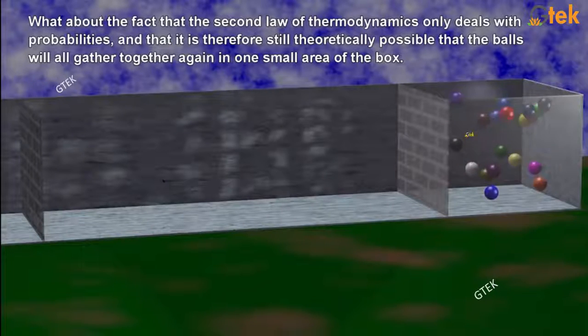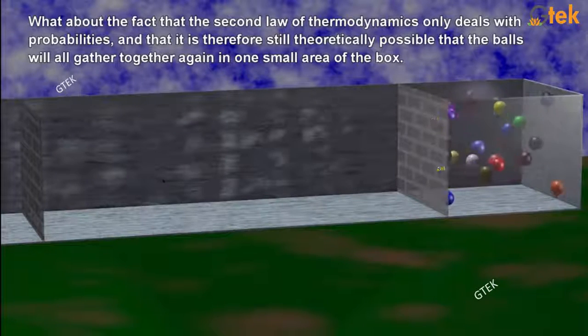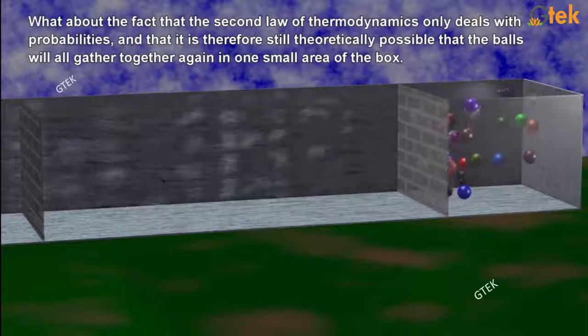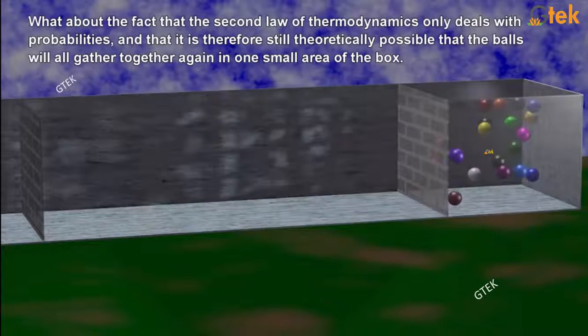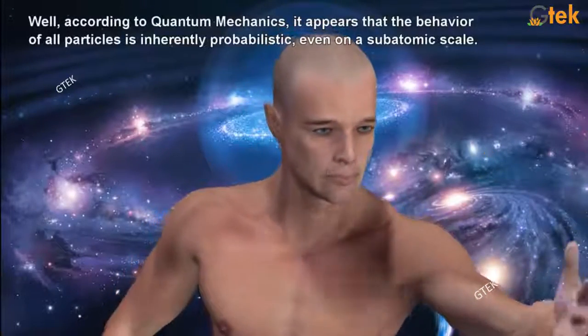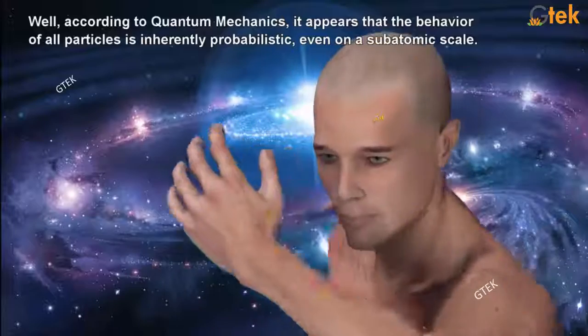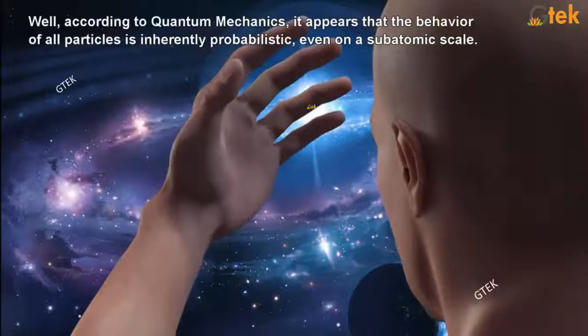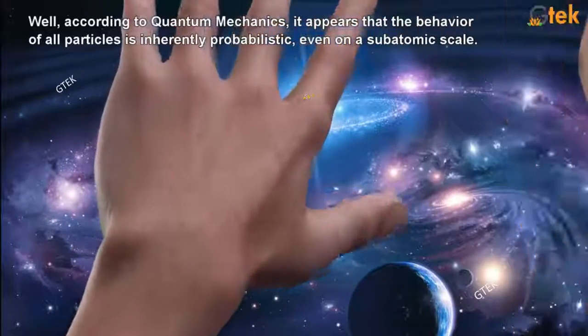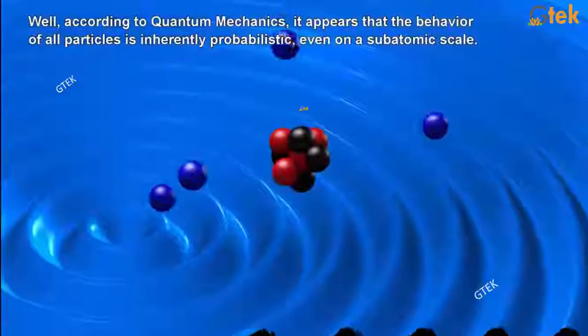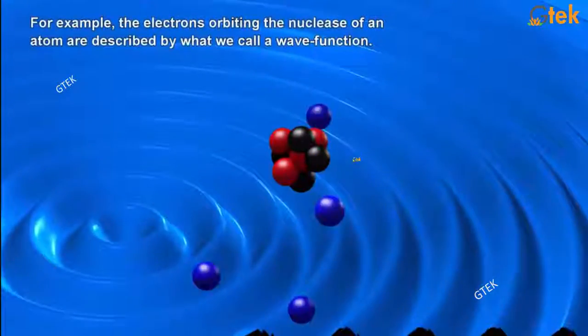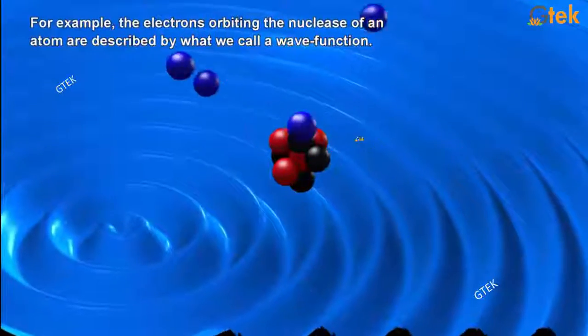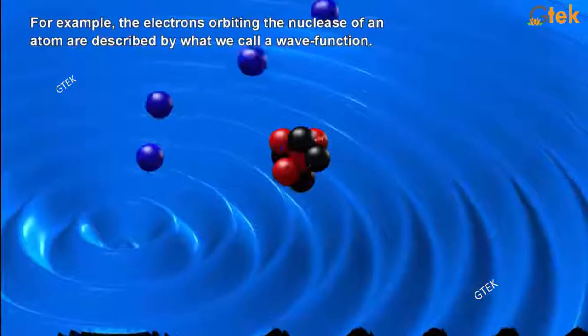The second law of thermodynamics deals with probabilities and therefore it's still theoretically possible that the balls will all gather again in one small area of the box. According to quantum physics, it appears that the behavior of all particles is inherently probabilistic even on a subatomic scale. For example, the electrons orbiting the nucleus of an atom are described by what we call a wave function.